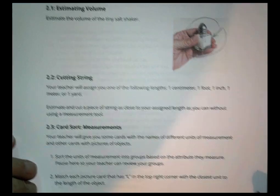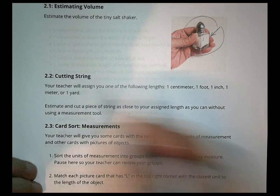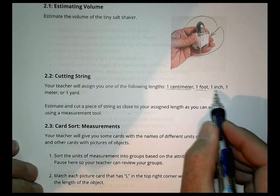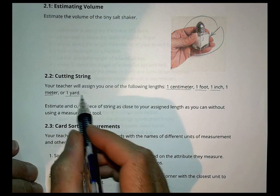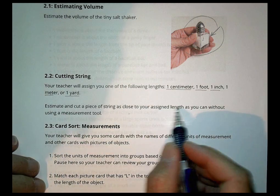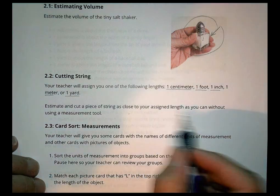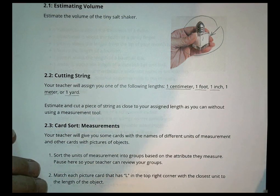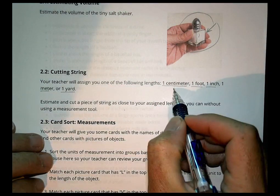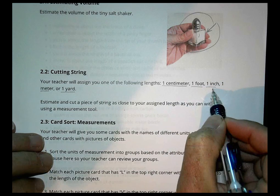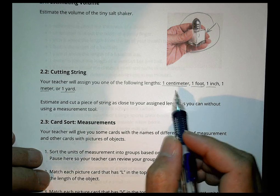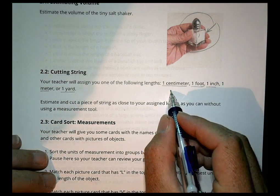And so in the second activity that you may be doing in class today, it's called cutting some string. And it says your teacher gives you different lengths, either one centimeter, one foot, one inch, a meter, or a yard. And then you're supposed to estimate and cut a piece of string as close to your assigned length as you can without using a measurement tool. So this is something you can do at home or on your own. Just get out some string and see if you can, without using any rulers or measurement tools, see if you can cut a piece that's about a centimeter and a foot and an inch.